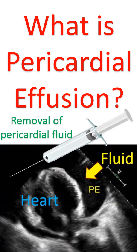Cardiac tamponade needs urgent removal of fluid from the pericardial cavity by needle aspiration, or surgical drainage if the fluid is very thick. Very thick fluid can occur if the collection is due to some types of bacterial infection.